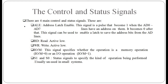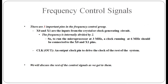S0 and S1 are status signals that specify the kind of operation being performed; they are usually unused in small systems. For frequency control, X0 and X1 are inputs from the crystal or clock-generating circuit. The frequency is internally divided by 2, so to run the microprocessor at 3 MHz, a clock running at 6 MHz is used. CLK out is an output clock pin used to drive the clock for the rest of the system.